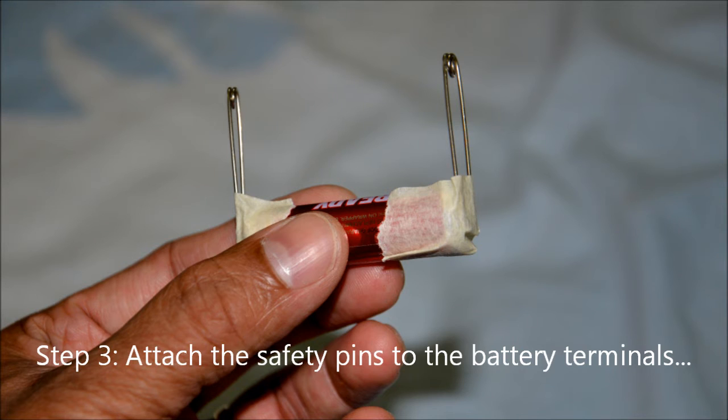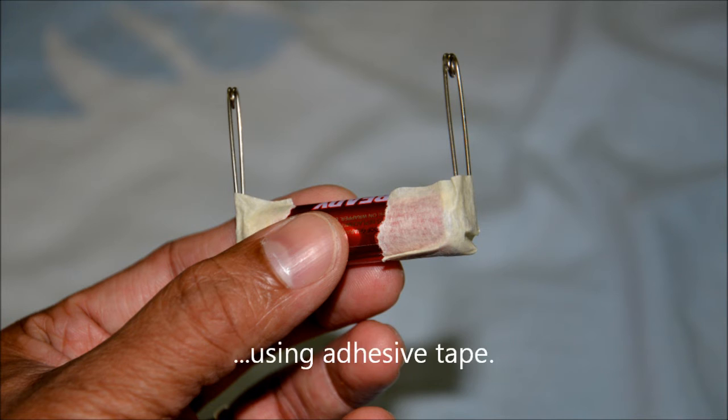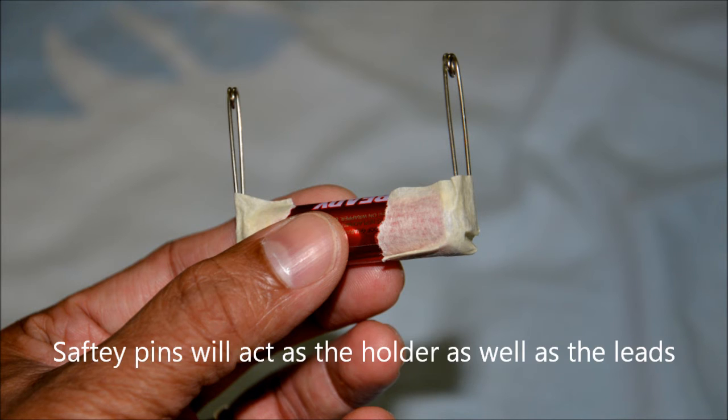Step 3. Place the safety pins on both terminals of the battery and fasten them with adhesive tape as shown here. Make sure that the loops or the unfastened ends of the safety pins should be at the same level.